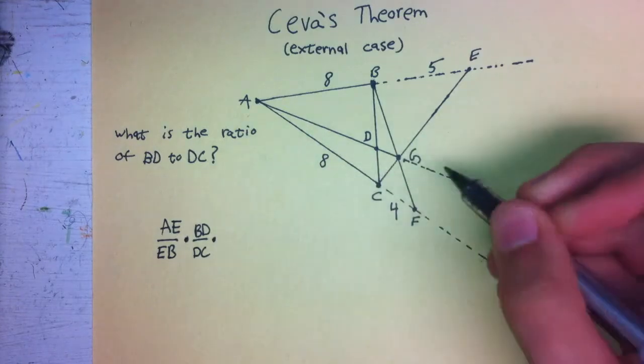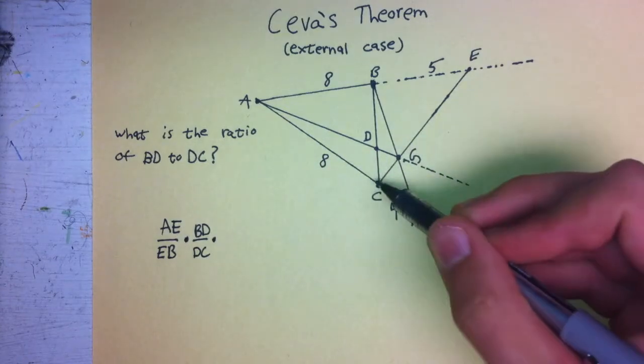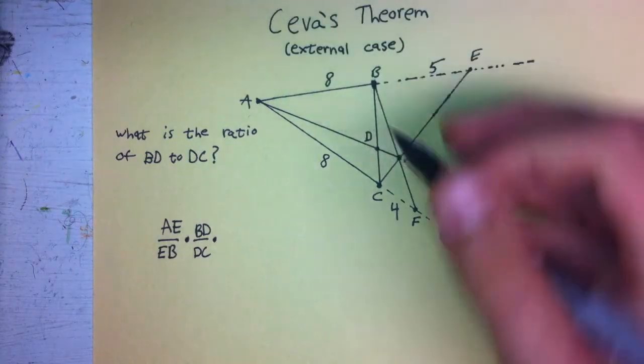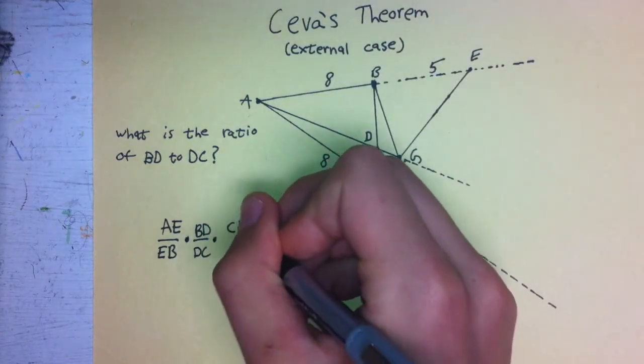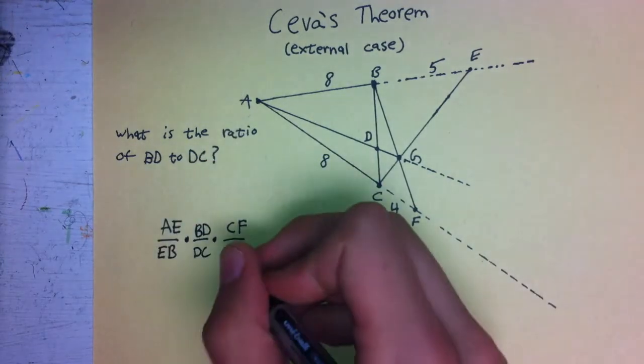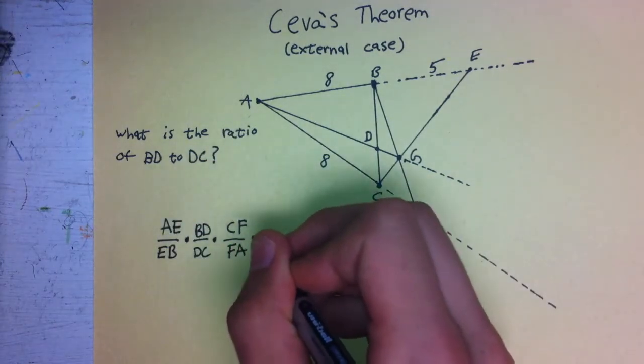And then it will be multiplied by CF, because we're going from this vertice out to the intersection point along this line, which is point F, and then divided by FA as we go back to the original vertice, and that all is equal to 1.